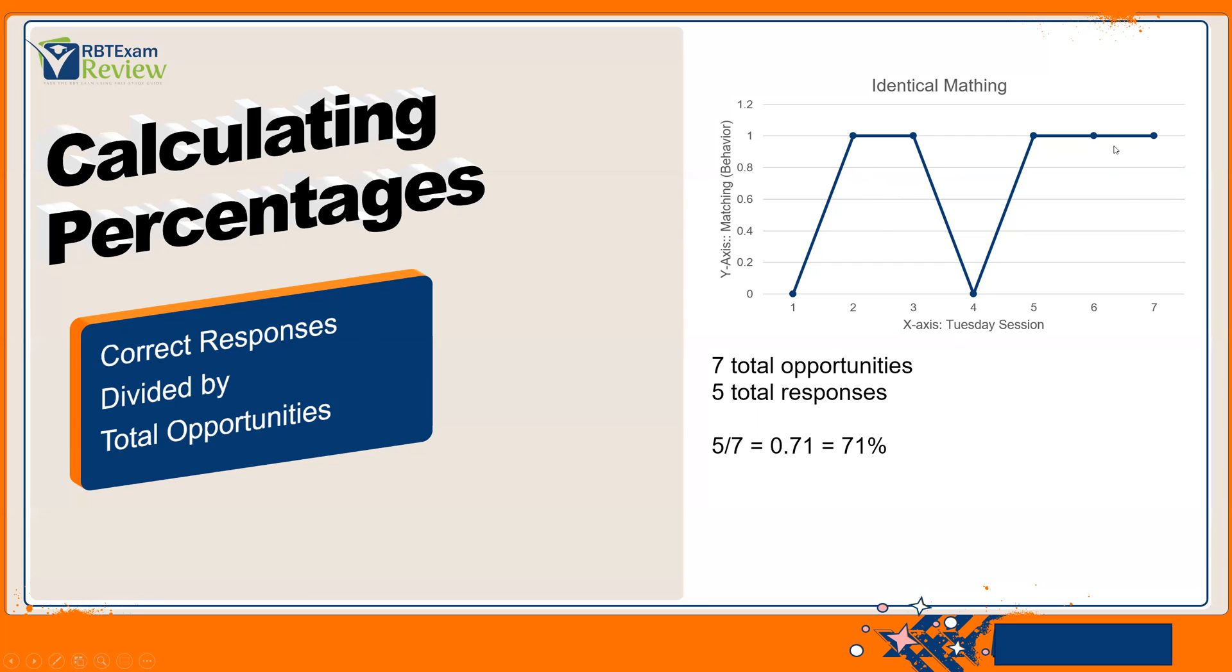So, we have five responses, seven opportunities. That gives us 71%, and that's all percentage is. So, you're looking at responses versus opportunities. And it really depends on are you looking for correct responses. Are you looking at percentage of time behavior happens during the day? Whatever it might be, you're just looking at responses divided by opportunities. Again, when you're doing skill acquisition, you're typically looking for some sort of mastery, typically around 80% or 90%. So, you want to know how many you got correct out of how many opportunities. So, we can see here, for identical matching, five responses were correct out of seven total opportunities, which equals 71% correct. So, responses divided by opportunities.